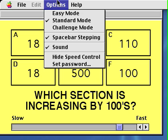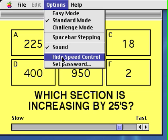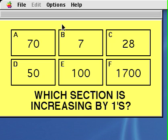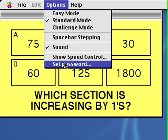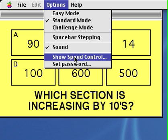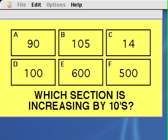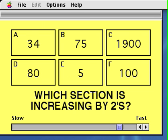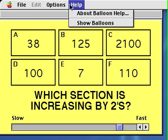What else do we have in this game? You can switch off the space bar stepping. You can hide the speed control if you'd like. The bottom, you can hide that speed control. You can set the password over here. And I'm going to type in the word password for password if you'd like. And then you can show the speed control again if you'd like. Here's the speed control. It comes back.